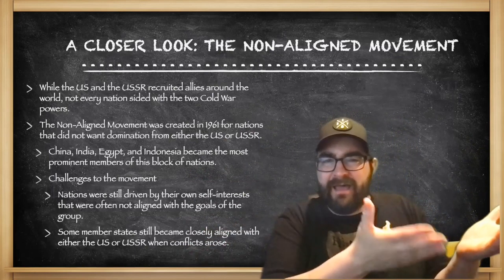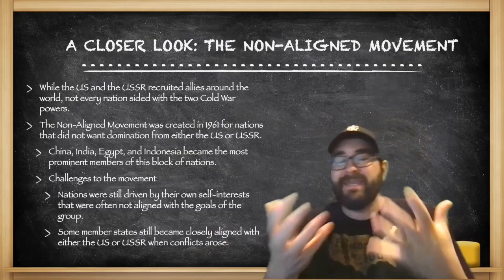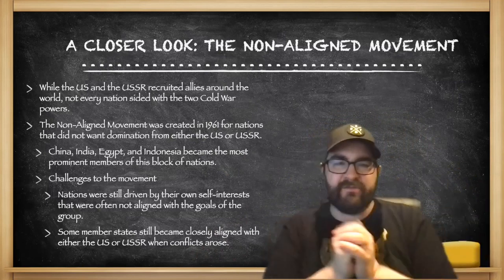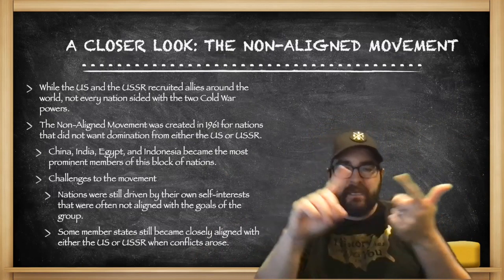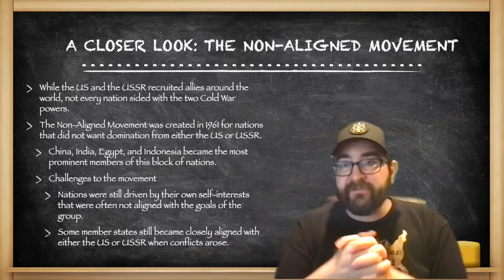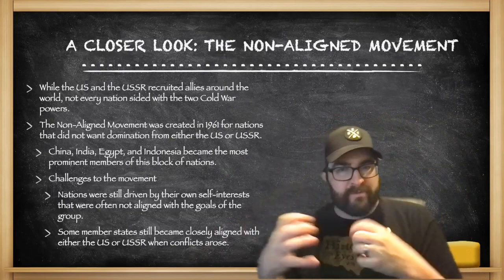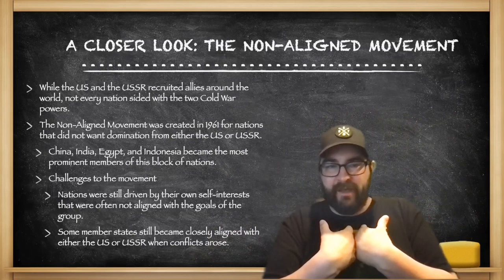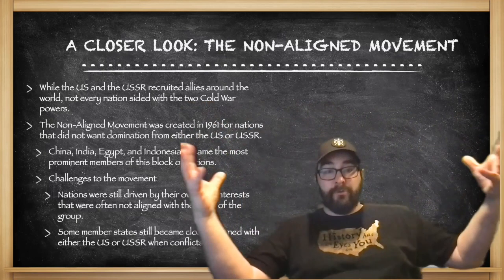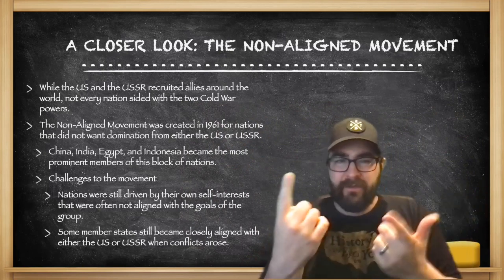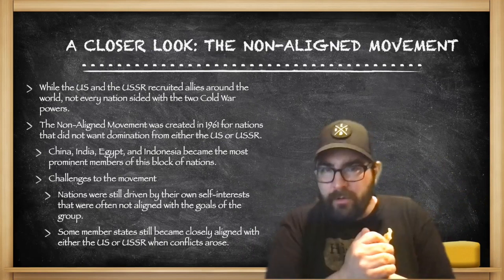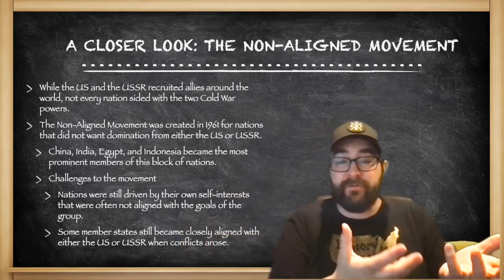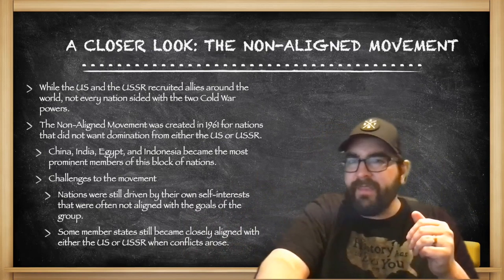Not everybody picked a side and joined Team USA or Team Soviet Union. The Non-Aligned Movement was born in the 1960s as some nations did not want to see domination by either the Soviets or the Americans. Countries like China, India, Egypt, and Indonesia became the most prominent members of this new block of nations. But challenges existed — nations are still driven by their own self-interest and not always aligned with the goals of the group as a whole. For example, India and China, two members of the Non-Aligned Movement, actually had a small war with each other in the early 1960s, and some member states would still align closely with the U.S. or Soviet Union when it benefited them.